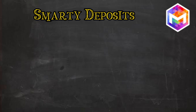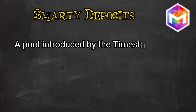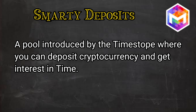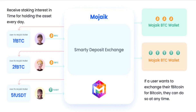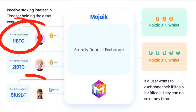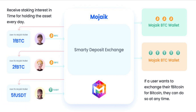TimeStope introduced for the first time a smarty deposit system. In smarty deposits, you can deposit cryptocurrencies like Bitcoin and USDT to earn time interest. There are no time limits and you can withdraw your crypto at any time. When you deposit Bitcoin or USDT in the smarty deposit exchange, you receive FBitcoin or FUSDT as a receipt token. You can directly transfer these FUSDTs or FBitcoin to other people as well. Whoever holds these receipt tokens can exchange them for the original crypto at any time.